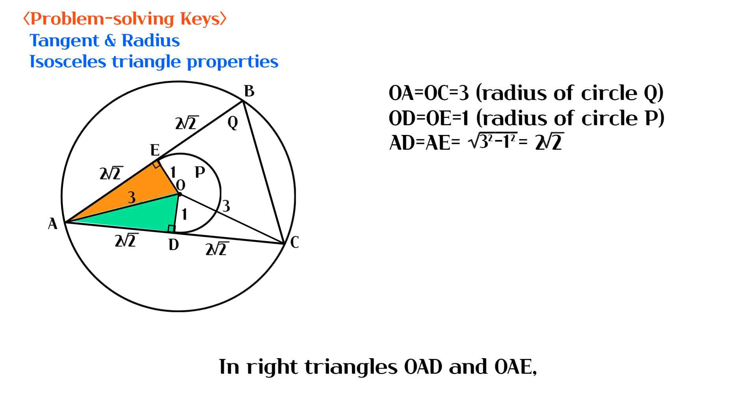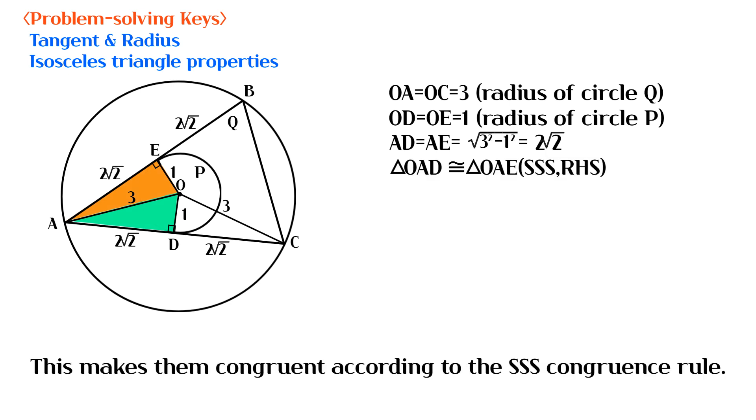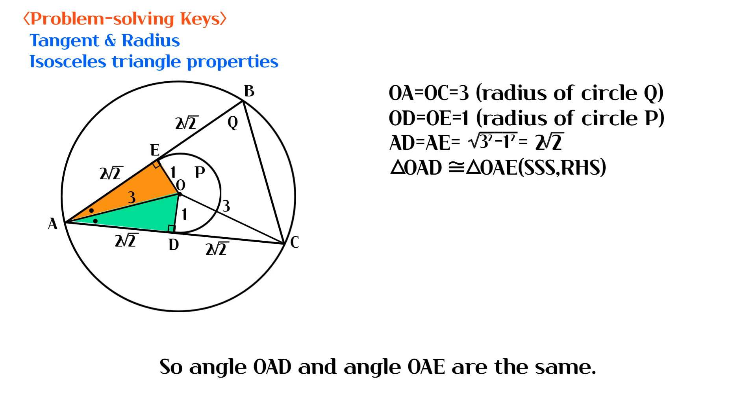In right triangles OAD and OAE, all three sides are identical. This makes them congruent according to the SSS congruence rule. So angle OAD and angle OAE are the same.